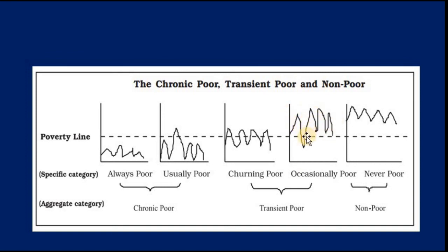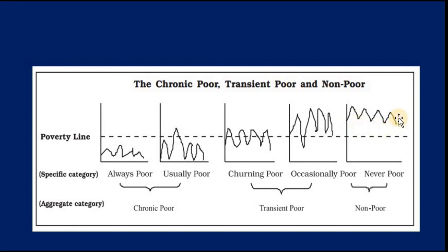For almost the entire observation period people may be rich, but occasionally — due to floods or drought — they fall into poverty. In the last category, people are never poor: their standard of living is very good and they remain above the poverty line. These are the ways poverty is categorized.